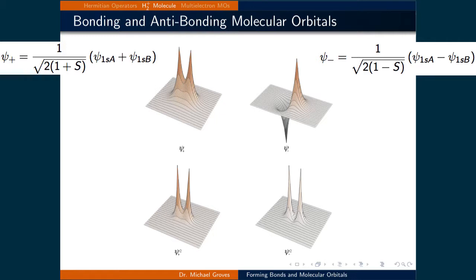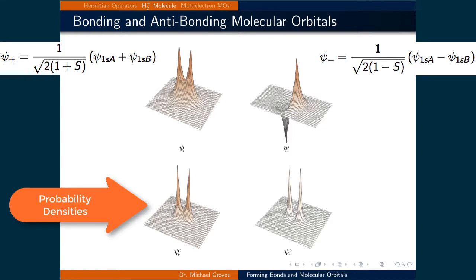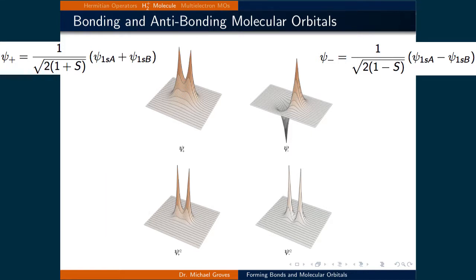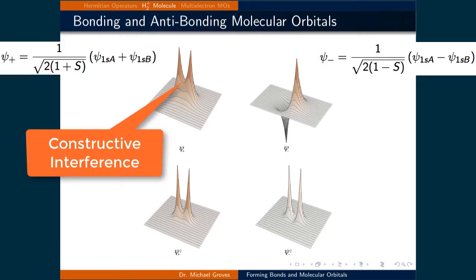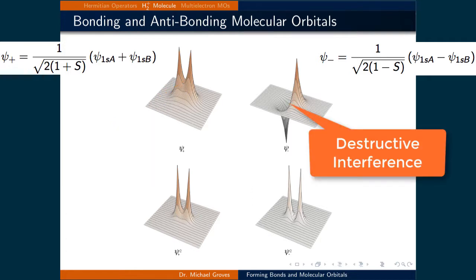Plotting these two wave function solutions gives the top two images, while plotting psi star psi, meaning the probability density, gives the bottom two images. What we can see is that for psi plus, there is constructive interference in the wave function between the two nuclei, while for psi minus, there is destructive interference between the two nuclei.